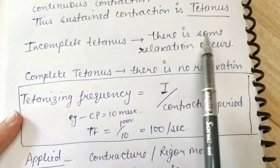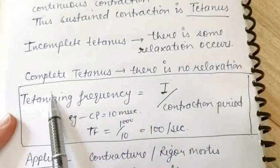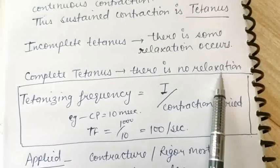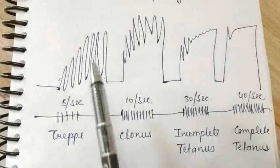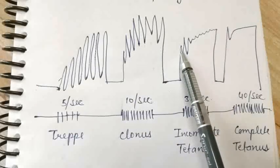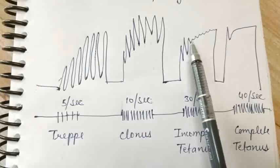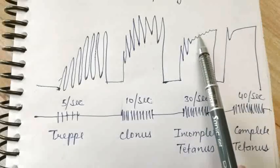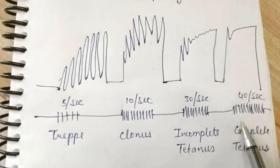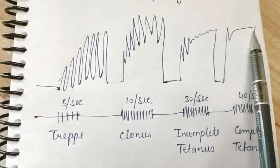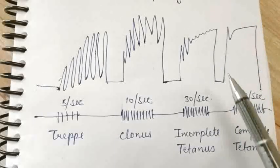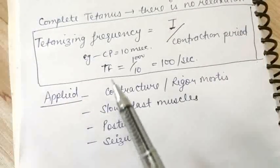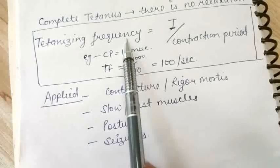Tetanus is of two types: incomplete tetanus, where you can see some episodes of relaxation, and complete tetanus, where there is no relaxation at all — a straight sustained contraction line. In incomplete tetanus you will get some relaxation episodes; in complete tetanus there is a straight line of sustained contraction. The first few contractions show the beneficial effect.